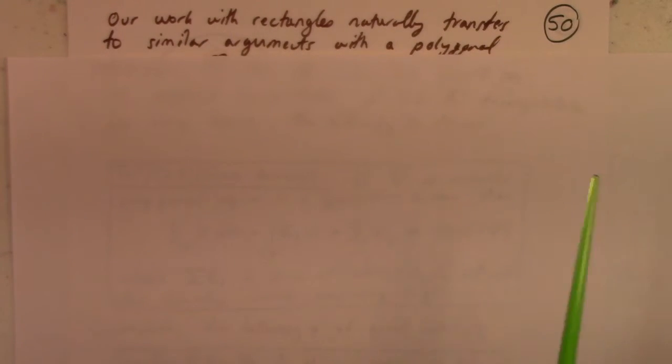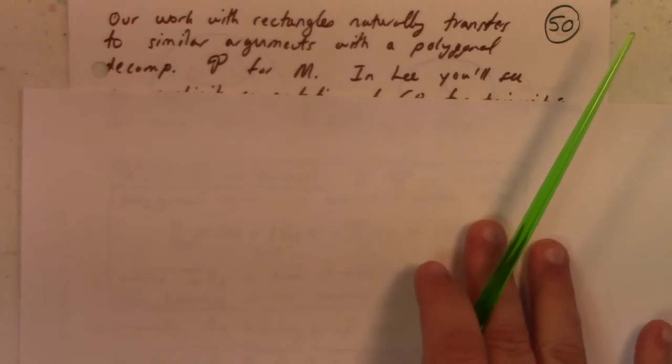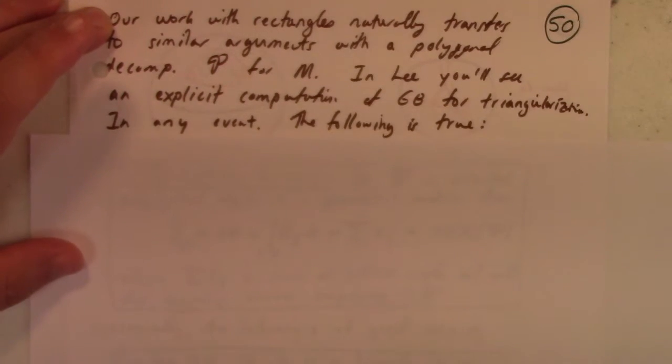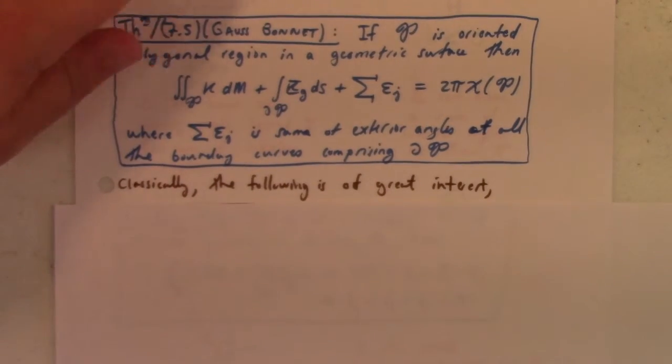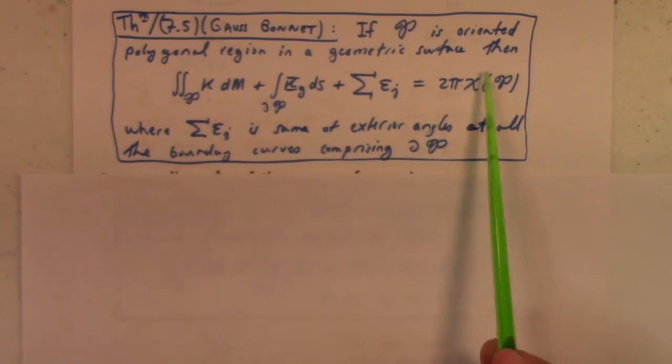Our work with rectangles naturally transfers over to similar arguments with polygonal decomposition. For an oriented polygonal region P in a geometric surface, the total Gaussian curvature is the arc length integral over the boundary of the geodesic curvature plus the sum of the exterior angles, equal to 2π times the Euler characteristic of the polygonal region.